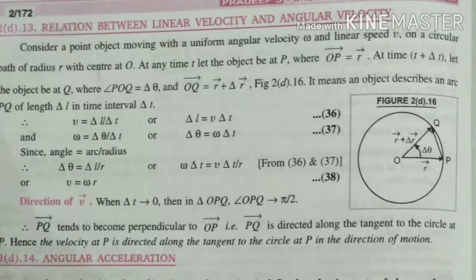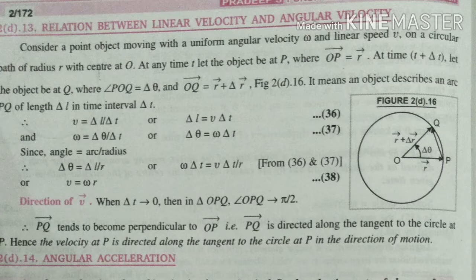Next is relation between linear and angular velocity. What is the difference between angular velocity and linear velocity? Now we will find the relation between them. Consider a point object moving with uniform angular velocity omega and linear speed v in a circular path of radius r with center at O.